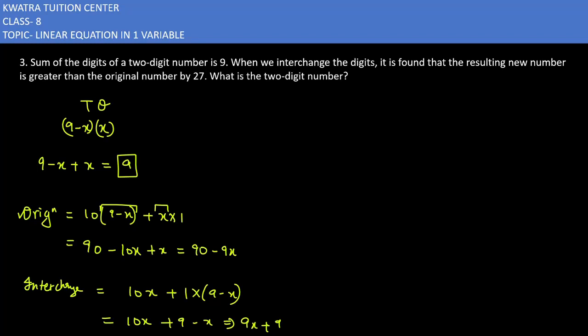According to this question, it says the resulting new number is greater than the original number by 27. The resulting new number is 9x plus 9, and it would be equal to the original number, which is 90 minus 9x, increased by 27.